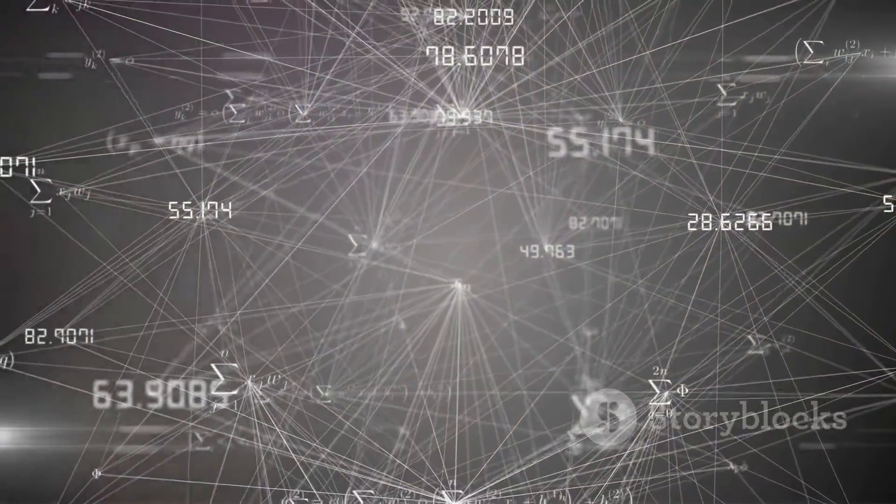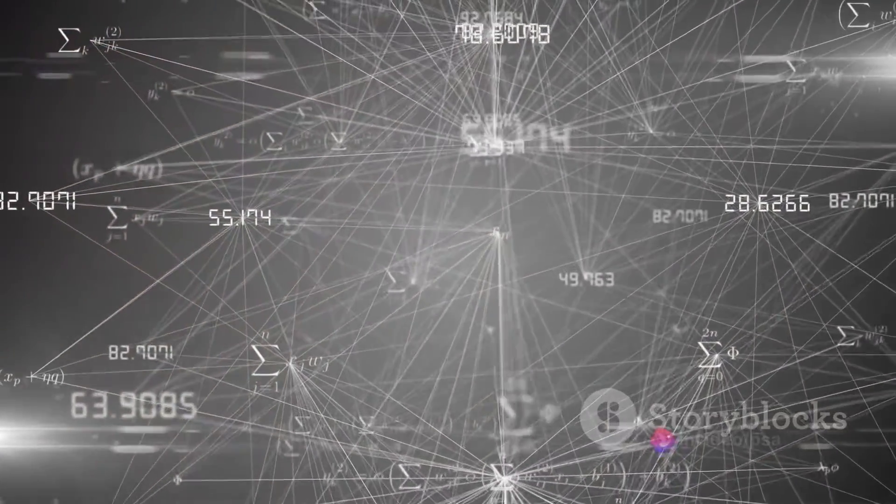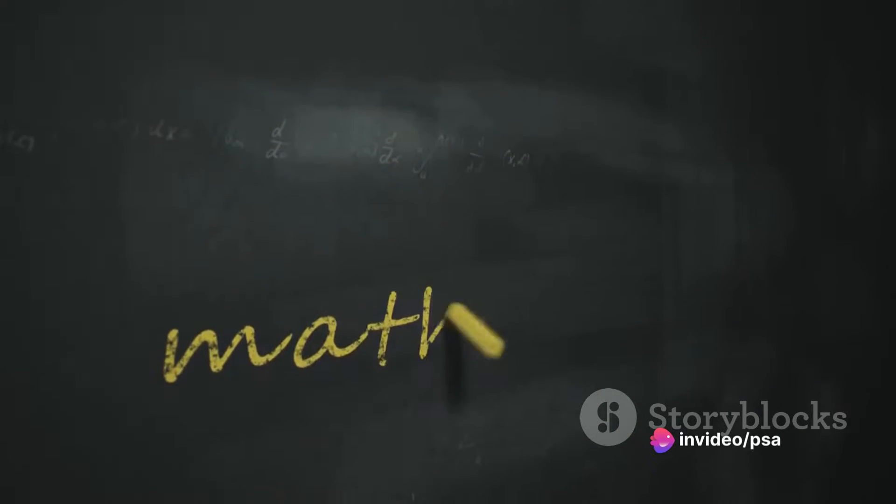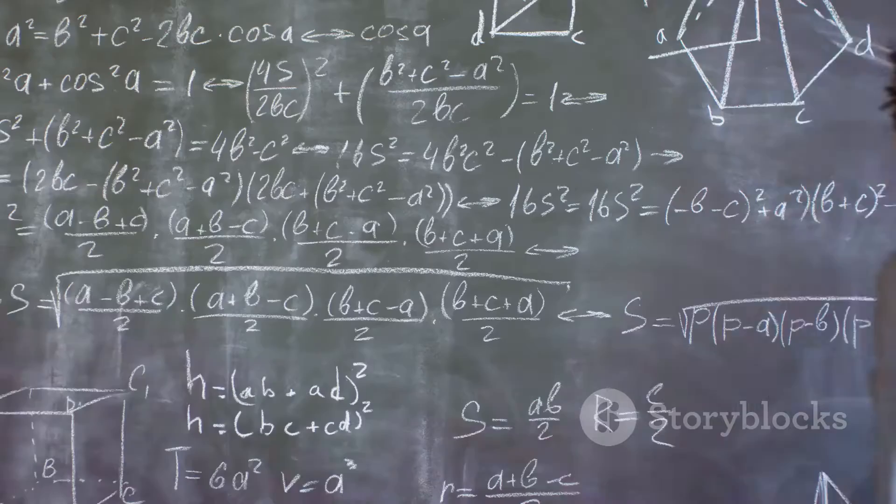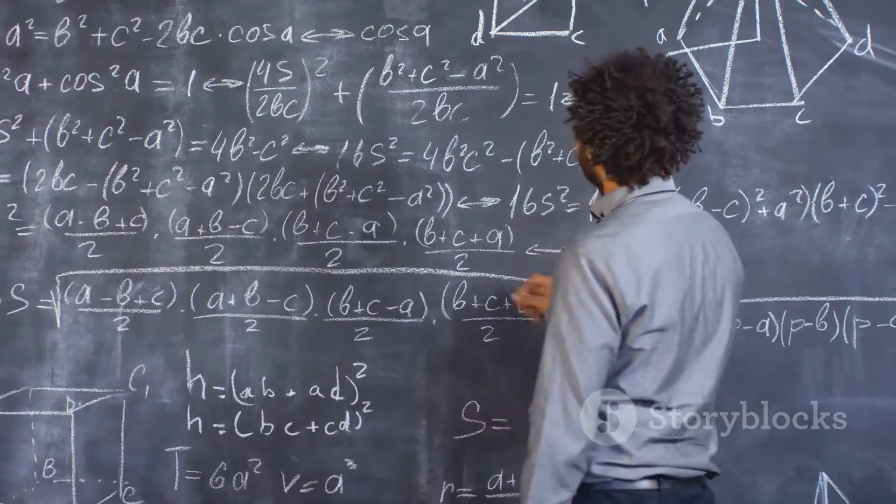Goldbach's conjecture, as straightforward as it may seem, has proven to be anything but simple. Despite being proposed in the mid-18th century, the conjecture remains to this day unproven. It's one of the oldest unsolved problems in number theory, and it's not for a lack of trying.